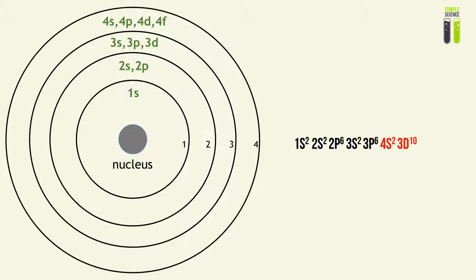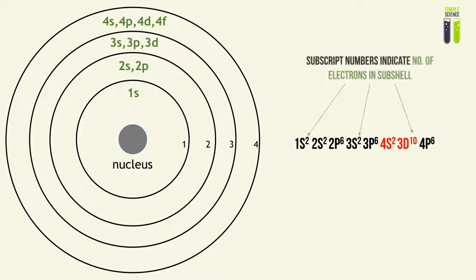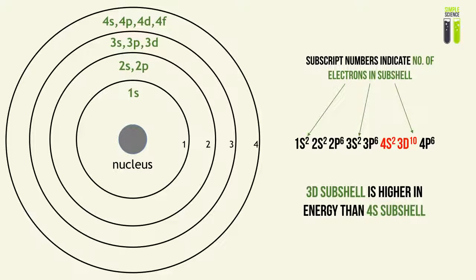After 4S we continue with 4P⁶. The key thing to remember is that the 3D subshell is higher in energy than the 4S subshell, so when filling up you must write 4S before 3D. The superscript number on each subshell notation — for example 1S² or 2S² — represents the number of electrons within that subshell.